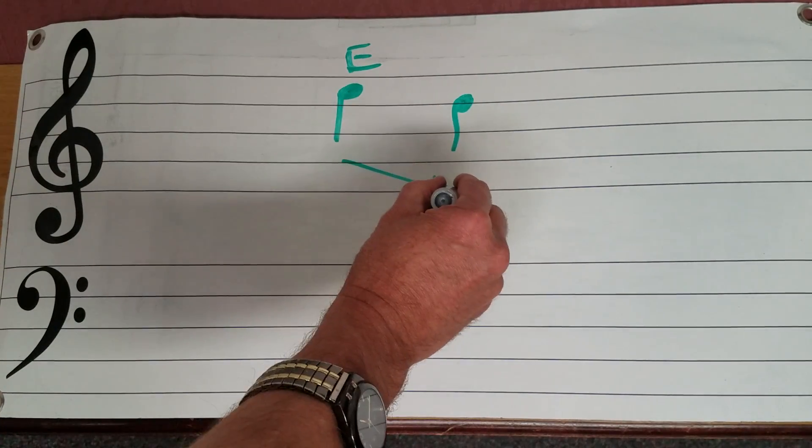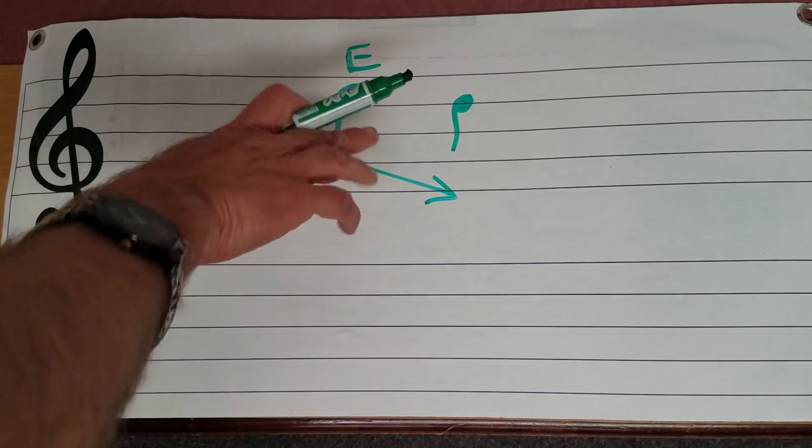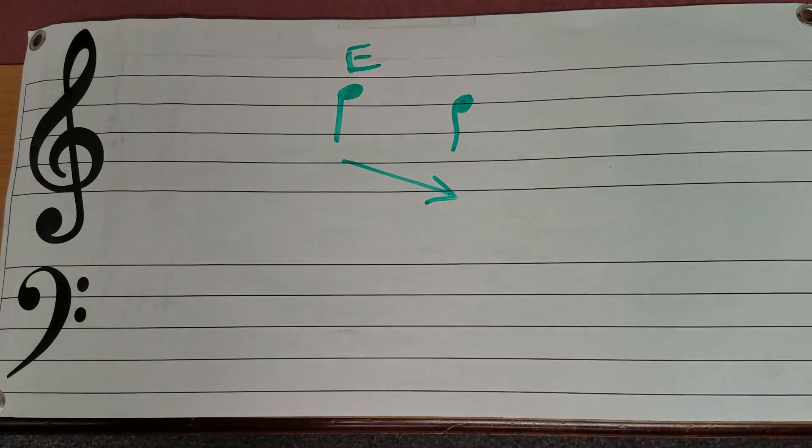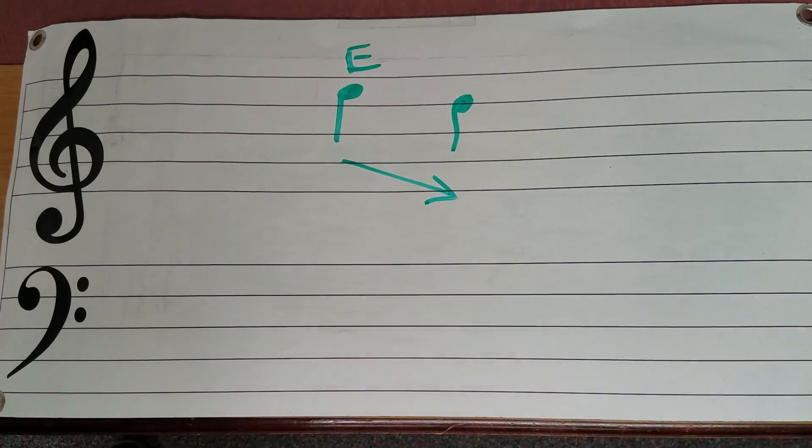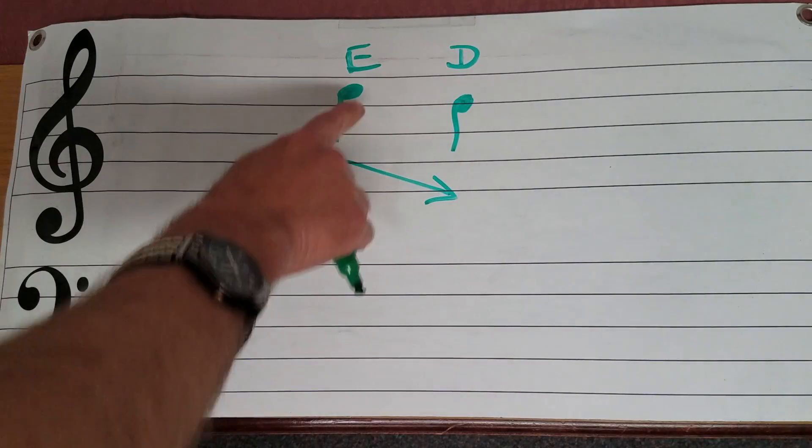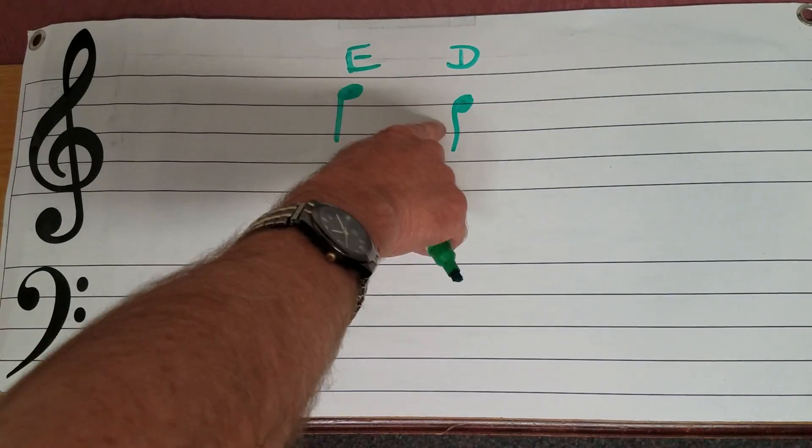Now, remember the scale always goes in a directional sense. So we either go down or we go up. So once you know that this highest note up here is E, we then know that this note is D because it's a step right below it.